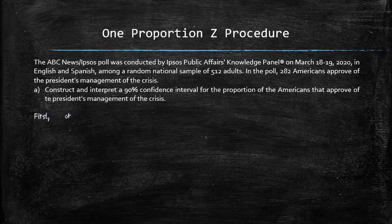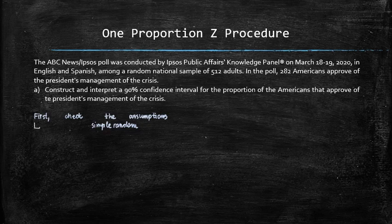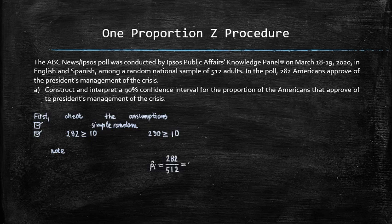First, let's check if all necessary assumptions are satisfied. The sample is simple random, check. The number of positive responses is 282, which is greater than 10. And the number of negative responses is 230, which is also greater than 10. So, the central limit theorem applies, check. Also, note that the sample proportion, p hat, is equal to 282 divided by 512, which is 55.08%.